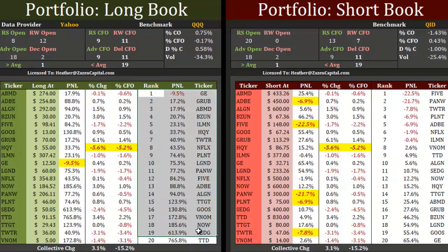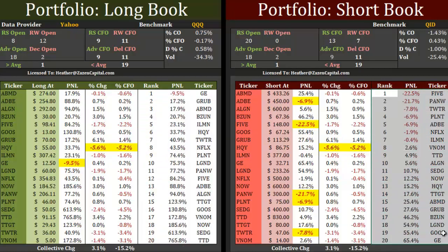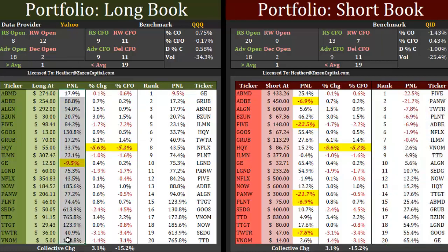It automatically ranks your portfolio long and short from weakest to strongest, so you can keep an eye on the positions that are not performing well — let your winners run and cut your losers short. This page will also highlight any loss that's over 5%, whether it's for your P&L as a whole, the percent change for the day, or the percent change from the open.